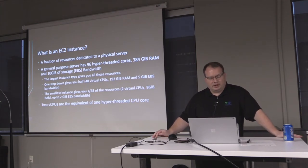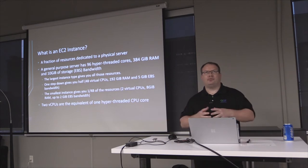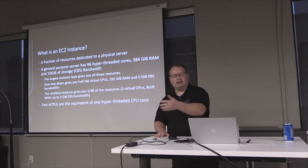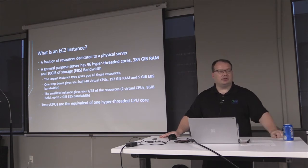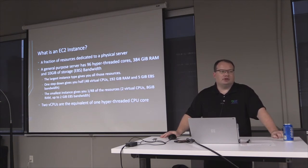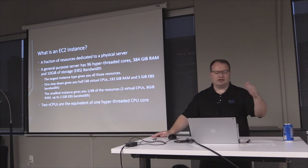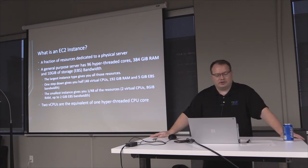The difference between local storage and EBS is that local hard drive data is destroyed if you stop the instance, whereas EBS is maintained just like a regular hard drive. The way they block these out: the largest instance gives you the entire 96 cores, 384 GB of memory, and full bandwidth. Stepping down splits it like a tree — half, then a quarter — down to one forty-eighth, meaning you can put 48 instances on a single server.